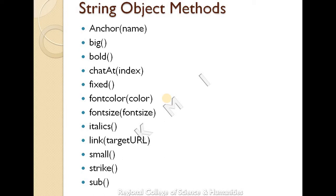Some string object methods include: anchor — creates an anchor element; big — displays text in a big font; bold — displays text in bold; charAt — returns the character at a specified position; fixed — displays in a tt element; fontcolor; fontsize; italics; link; small; strike through; and sub — creates a sub element.